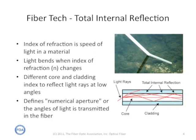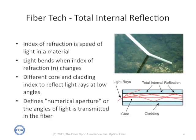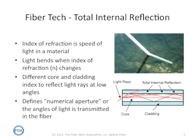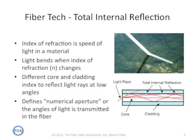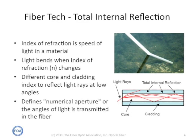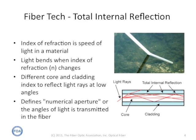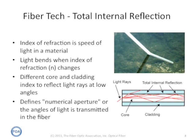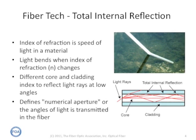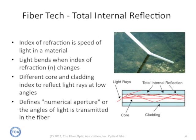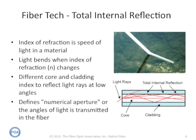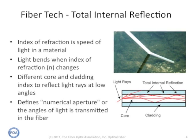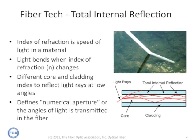The secret to how optical fiber works is total internal reflection. You've seen this yourself when you stick a stick down in water and you see it bend. That's caused by the different index of refraction between the water and air. The core of the fiber and the cladding have different indices of refraction, and that is used to reflect light of certain angles to totally trap them in the fiber. The angle at which they're trapped is called the numerical aperture.